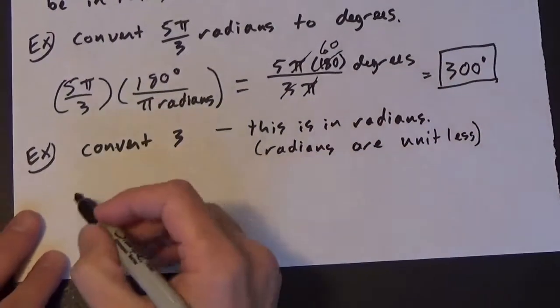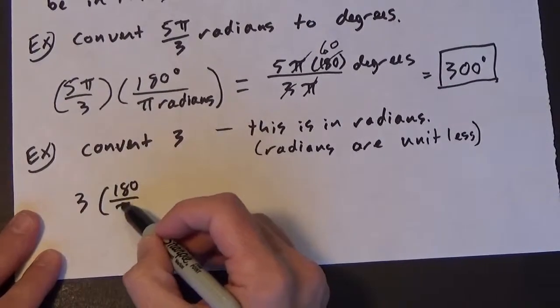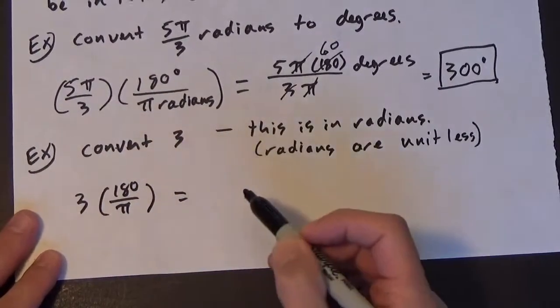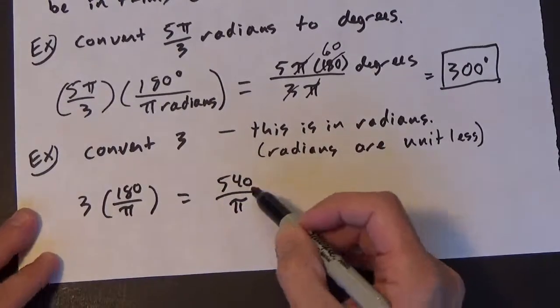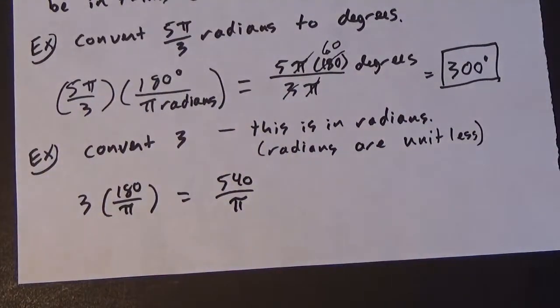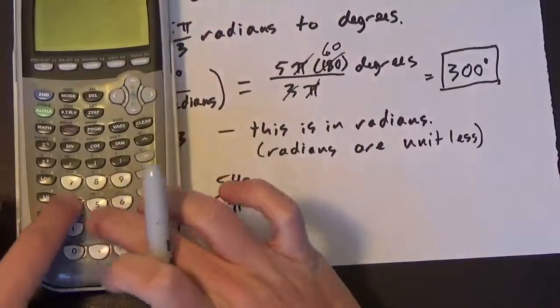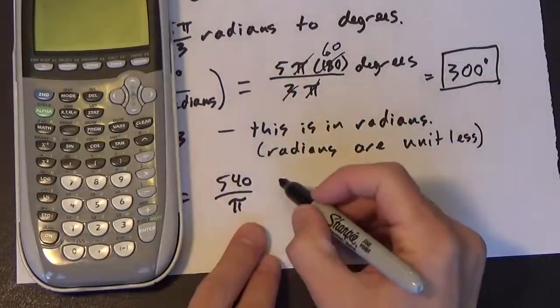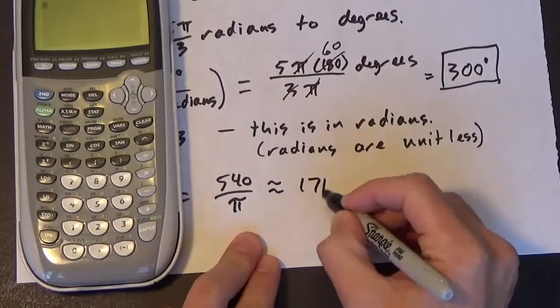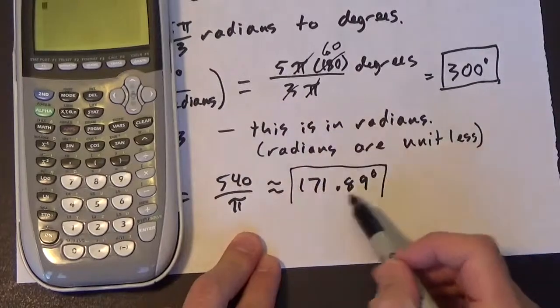So if that's the case, then we now know that we take 3 times 180 over pi, so that's going to be 540 over pi. Now this is a case where, because we didn't have the pi in there, you've got to get a decimal equivalent of that. So let's go ahead and get 540 divided by pi. And we approximately have a value of 171.89 degrees. And so that would be our answer.